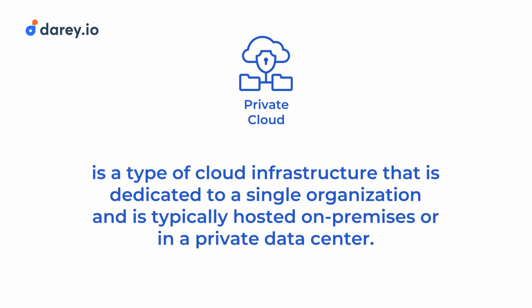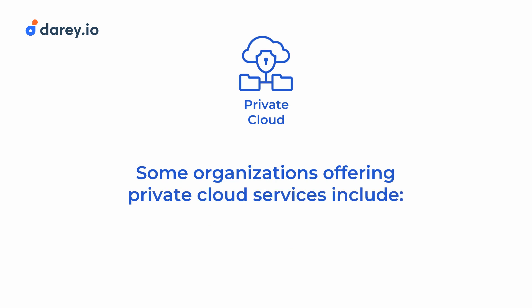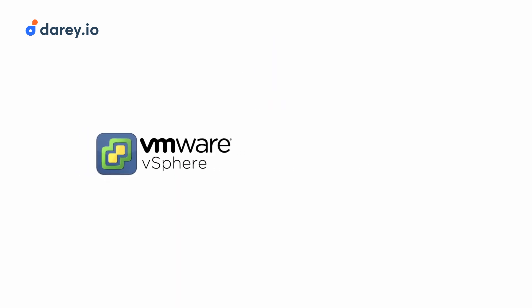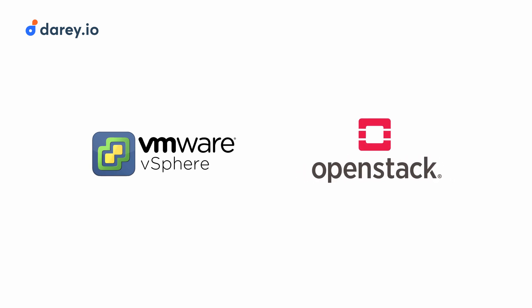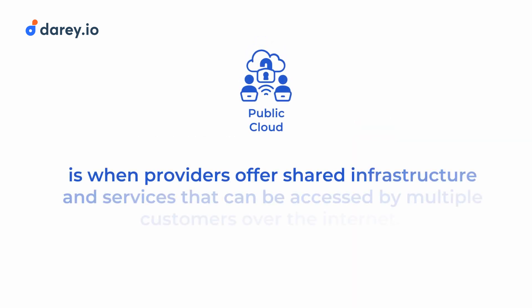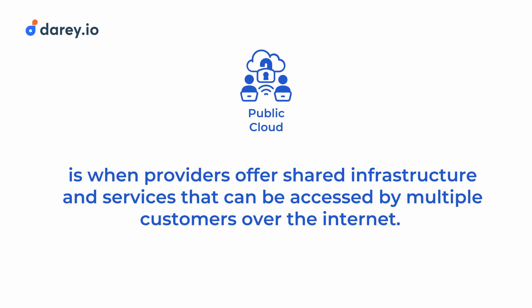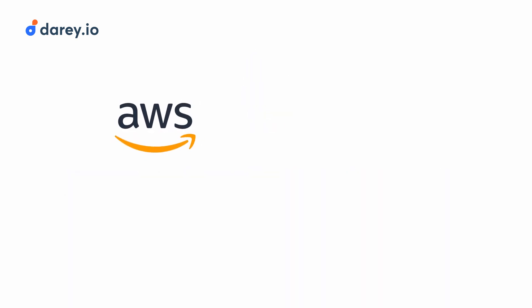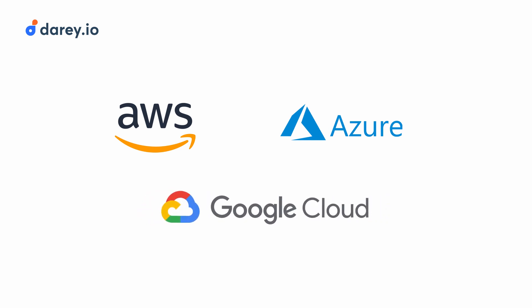Private cloud is a type of cloud infrastructure that is dedicated to a single organization and is typically hosted on-premises or in a private data center. Some organizations offering private cloud services include VMware, vSphere and OpenStack. Public cloud, on the other hand, is when providers offer shared infrastructure and services that can be accessed by multiple customers over the internet. Examples of public cloud providers include Amazon Web Services, Microsoft Azure and Google Cloud Platform.